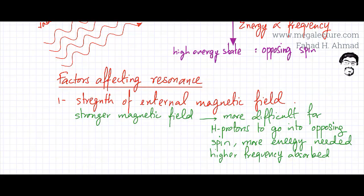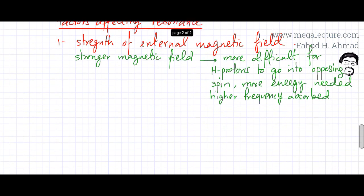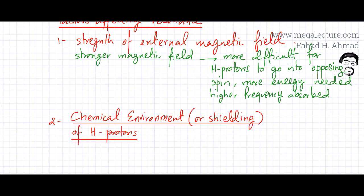With a stronger magnetic field, it is more difficult for hydrogen protons to go into opposing spin. More energy is needed, and since energy is proportional to frequency, a higher frequency would be absorbed. However, this first factor — strength of the external magnetic field — is not very important for our purposes. It is the second factor that is very important in determining the structure of a molecule: the chemical environment or shielding of hydrogen protons.